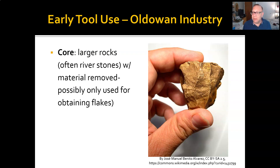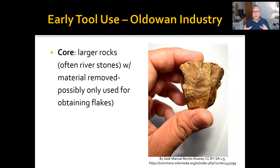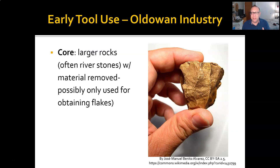In stone tools, we talk about several main kinds of artifacts. First, we have cores. Cores are larger rocks — usually river stones — that provide the material the stone tool will be made of. Sometimes the material you remove is what you're after; sometimes removing material shapes the core itself into the tool you want. So it can work both ways. Especially later on, it's the flakes that become important.